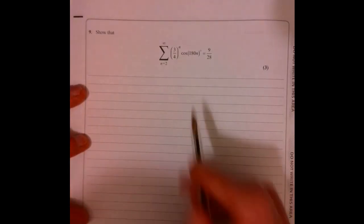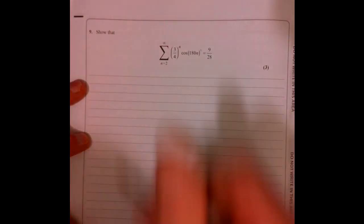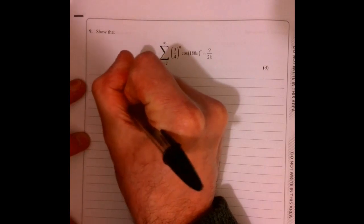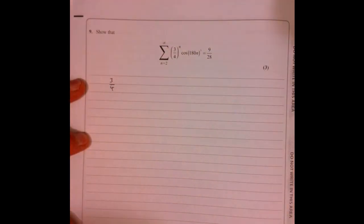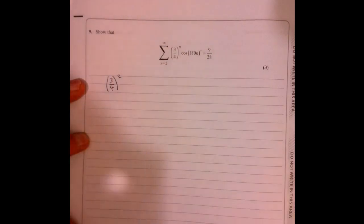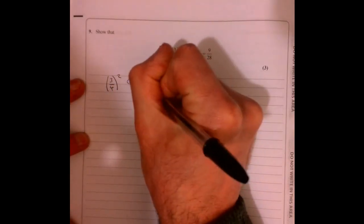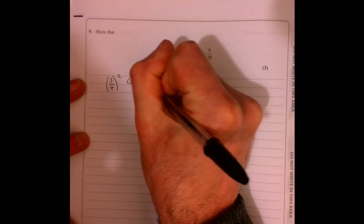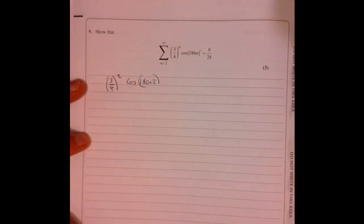Right, question nine. Now when I get one of these and I'm not really sure what to do, what I do is I just write out the first few terms. So the first one is when n is two. Just write them out just to get a feel of what's going on. There you go, that's the first one.